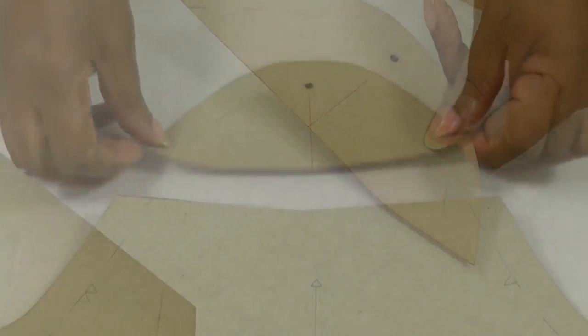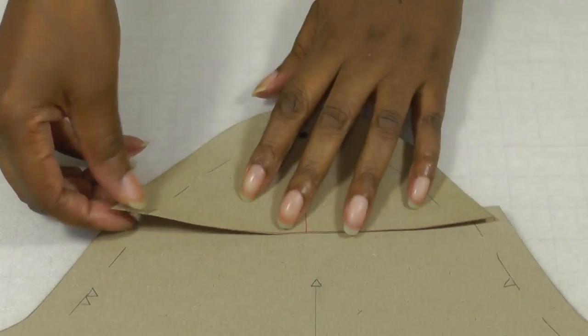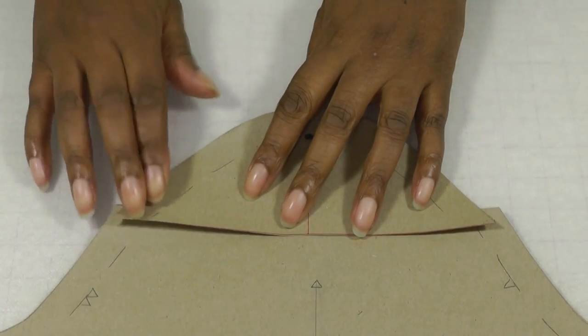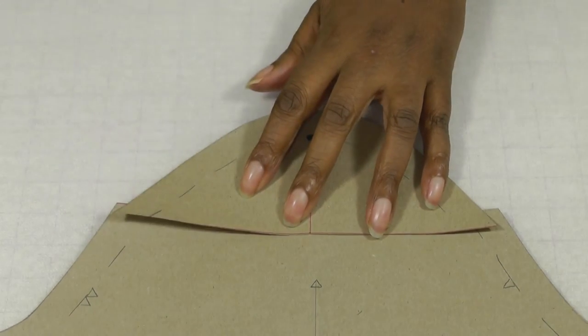Then take the cap of the sleeve and place it onto the main part of the sewing pattern to your required measurement and then stick it into place.